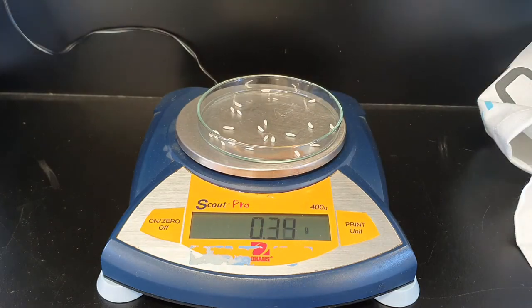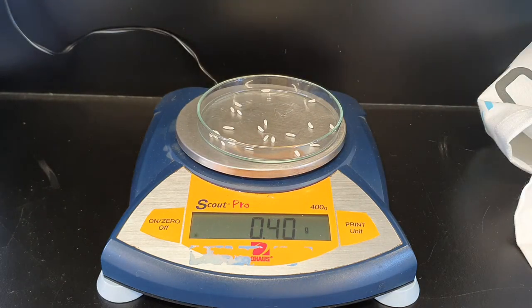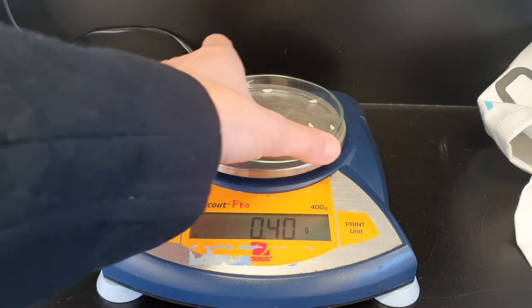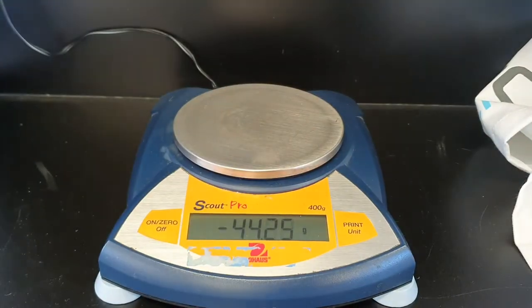And so the first substance that I've got is rice, just rice grains. And I'm just going to record what the mass of 20 grains or 20 atoms of each substance weighs. So 20 rice grains is equivalent to 0.40 of a gram.